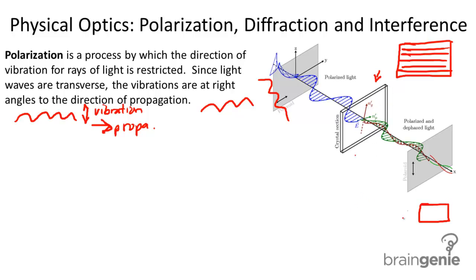An example of polarization is 3D glasses in a movie theater. Each of the two lenses has a different polarization pattern. Because of the different polarization pattern, you can create two different images for each different eye. That's what creates the 3D effect.